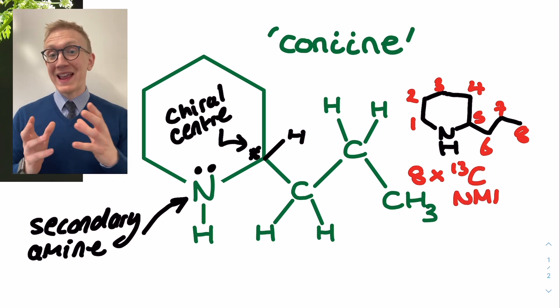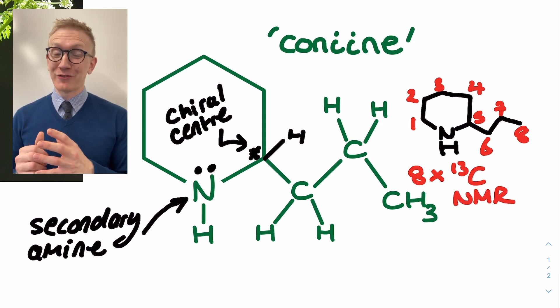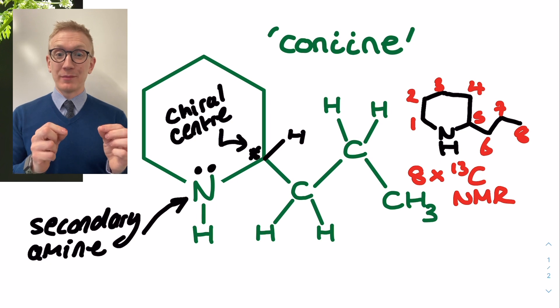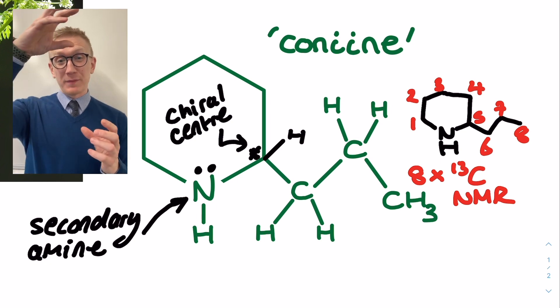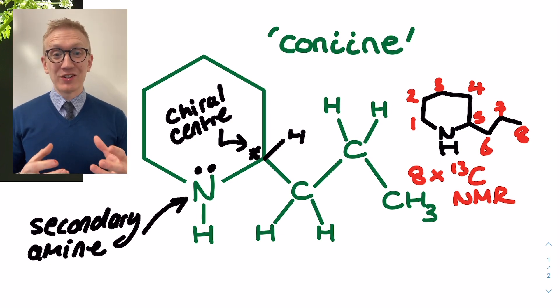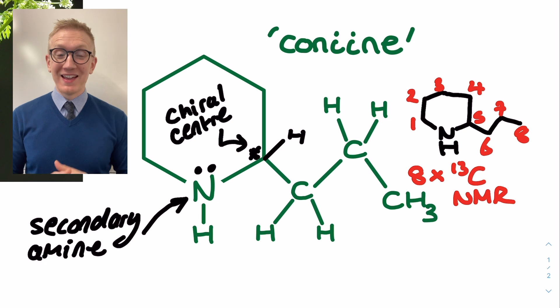Maybe try drawing out the coniine structure without that complete symmetry — maybe move the branching to the top — and then take a look at how many peaks you would anticipate considering that change.